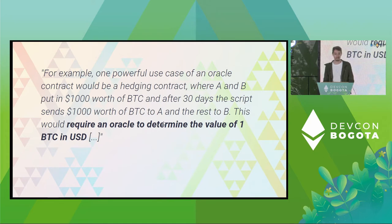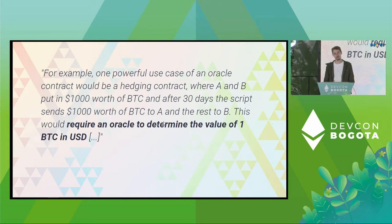So the quote is: for example, one powerful use case of an Oracle contract would be a hedging contract, where A and B put in $1,000 worth of Bitcoin. And after 30 days, the script sends $1,000 worth of Bitcoin to A and the rest to B. This would require an Oracle to determine the value of one Bitcoin in US dollars. Sounds a little bit like DeFi.